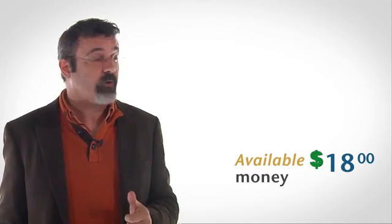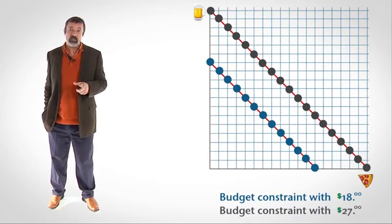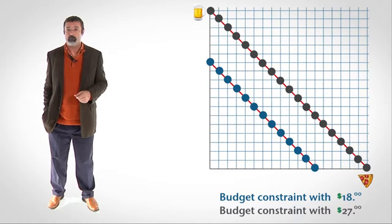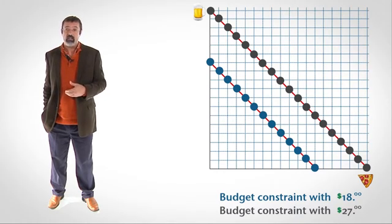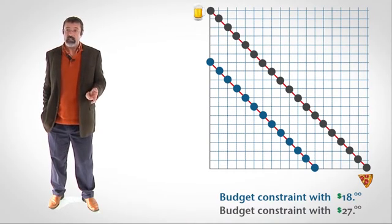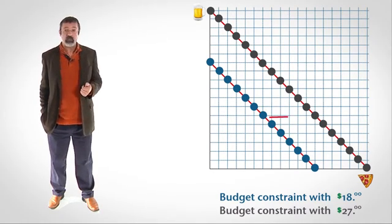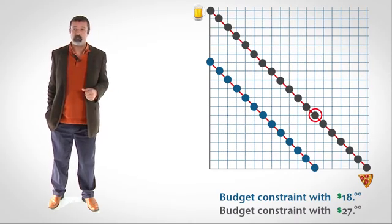What happens to the budget constraint if the person's available money increases? Suppose the person's money rises from $18 to $27. With $27, the person can now purchase more beer and more pizza than before. The person's budget constraint shifts to the right. According to the new budget constraint, the person can purchase combinations of beer and pizza that were previously unattainable. For example, when the person had $18, he could buy 6 beers and 6 slices of pizza. Now that the person has $27, he can buy 6 beers and 12 slices of pizza.